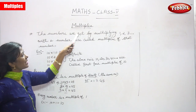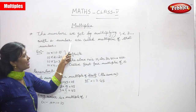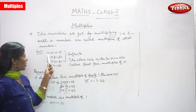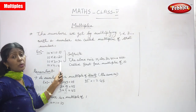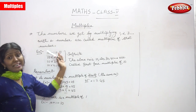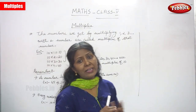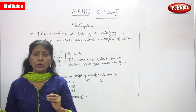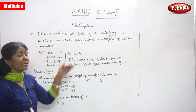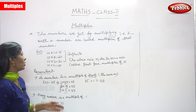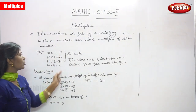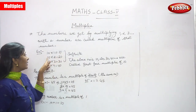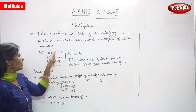To recap: the numbers we get by multiplying 1, 2, 3, and so on with a number are called multiples of that number. For example, 10 into 1 is equal to 10, 10 into 2 is equal to 20, 10 into 3 is equal to 30, 10 into 4 is equal to 40. So 10, 20, 30, 40 are multiples of 10.